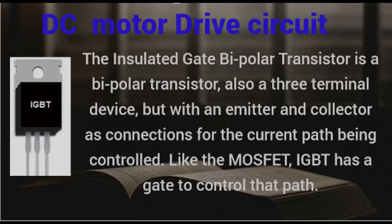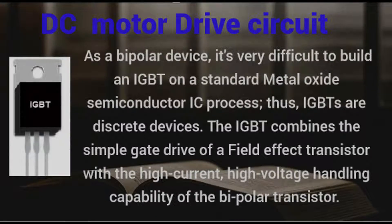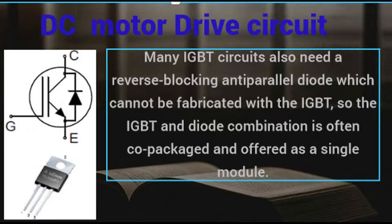As a bipolar device, it's very difficult to build an IGBT on a standard metal oxide semiconductor IC process; thus, IGBTs are discrete devices. The IGBT combines the simple gate drive of a field-effect transistor with the high-current, high-voltage handling capability of the bipolar transistor. Note that many IGBT circuits also need a reverse-blocking anti-parallel diode which cannot be fabricated with the IGBT, so the IGBT plus diode combination is often co-packaged and offered as a single module.